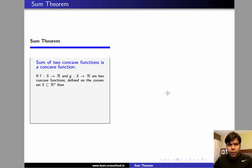So here is the sum theorem. If f is a function from S to R and g is also a function from S to R and let both these functions be concave, then the function t defined as t(x) = f(x) + g(x) for every x will also be concave.